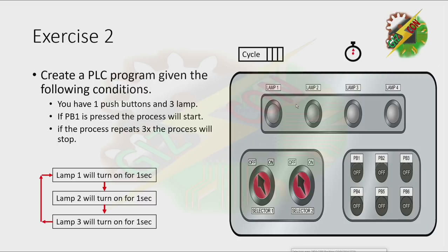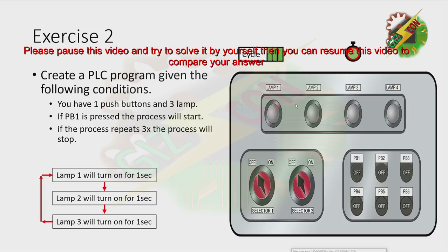Create a PLC program given the following conditions. You have 1 push button and 3 lamps. If PB1 is pressed, the process will start. If the process repeats 3 times, the process will stop. Now let's have our demonstration. I want you to pause this video and try to do it by yourself. Then after that, you can resume this video so that you can compare your answer to my answer.